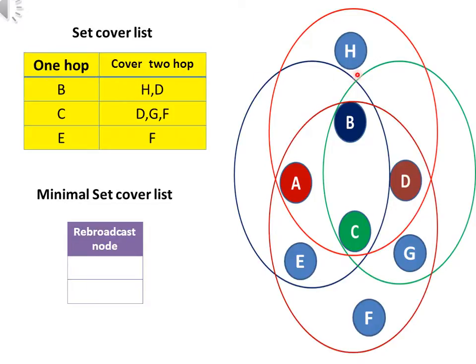So, there is no need for node E because the adjacent node of node E is already covered by node C. So, in the minimal set cover, we add only nodes B and C, not node E. Hence, in this way, we can solve the redundancy problem. Thanks to all.